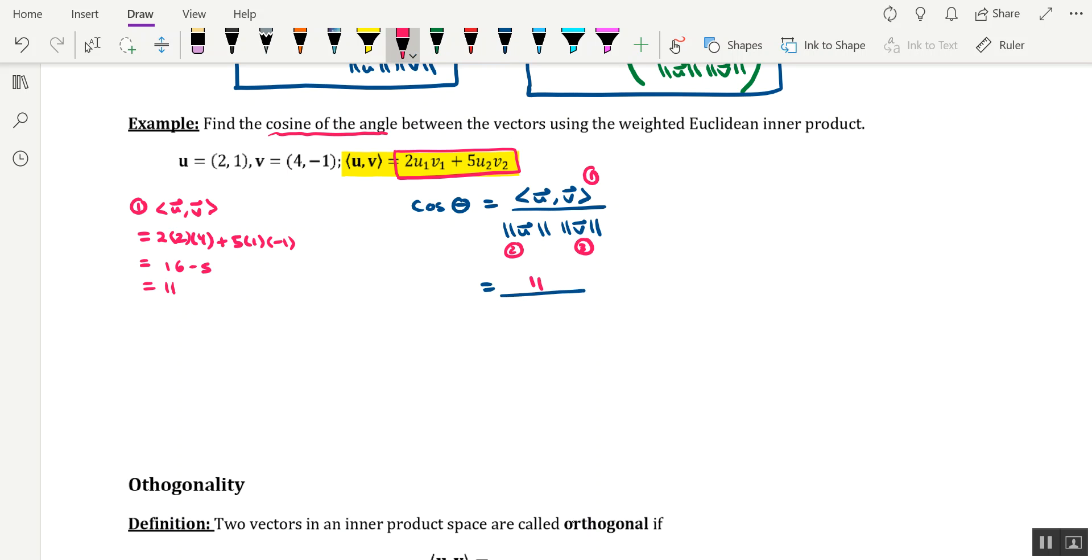And now we'll have to work on each of the norms. So let's start with the norm of u. The norm of u is given by the square root of the inner product of u with itself. So let's work on the inner product of u with itself. It's going to be 2 times u1 times u1 plus 5 times u2 times u2. And all that goes underneath the square root. So we're looking at the square root of 13. Okay, so that will go as the first factor of the denominator.